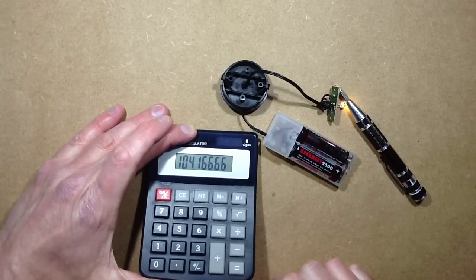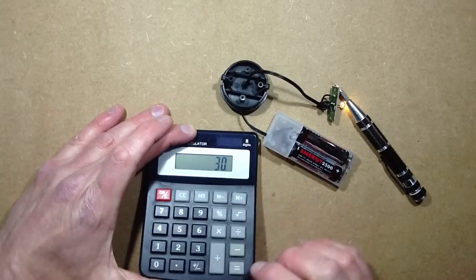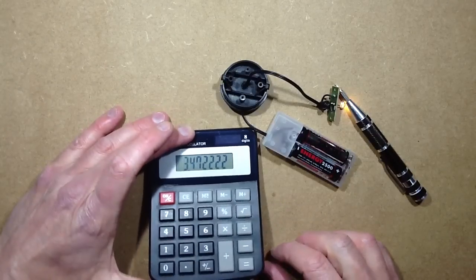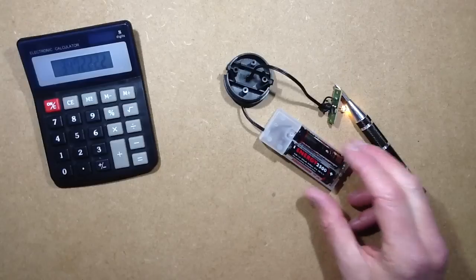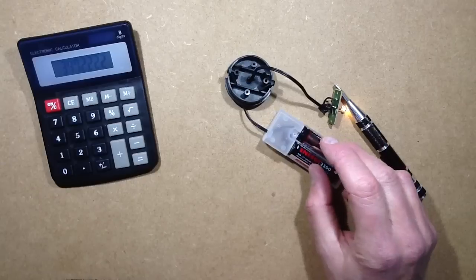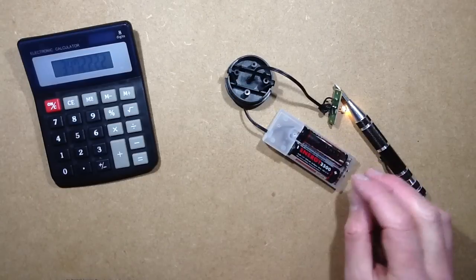That means it's going to run for 104 days. Divide it by 30 for the days of the month, and it shows that it will run for 3 months.